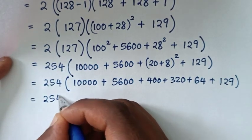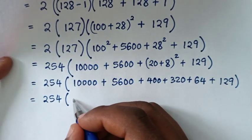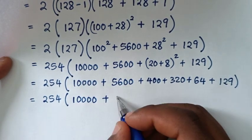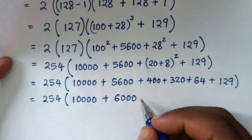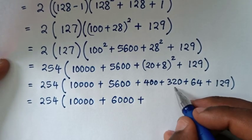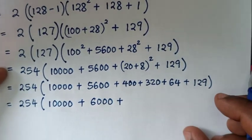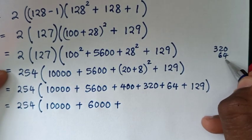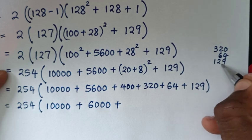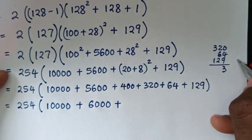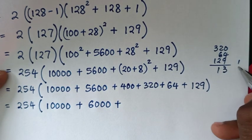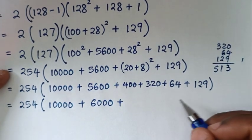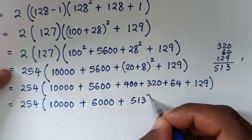It will be equal to 254 bracket, then 10000 plus 5600 plus 400 plus 320 plus 64 plus 129. Adding 320 plus 64 plus 129: that gives 513. So we have 254 bracket, summing all terms together gives 16513, bracket.